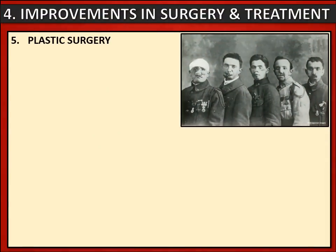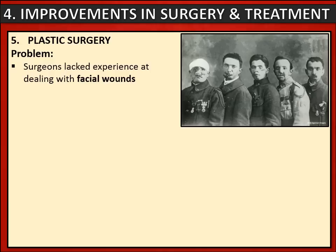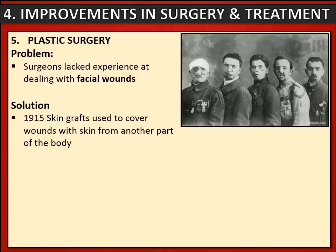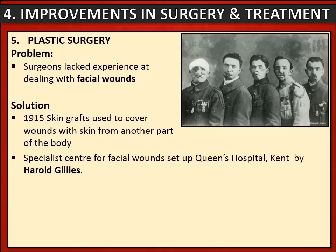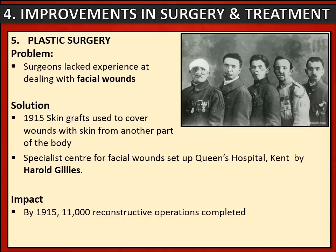Another area of surgery that developed was plastic surgery. At the start of the war surgeons lacked experience at dealing with facial wounds. The solution was to develop techniques to reconstruct soldiers' faces after they'd suffered terrible facial wounds. By 1915, a method called skin graft had been developed, which involved covering wounds using skin from other parts of the body. A key individual in this method was a surgeon called Harold Gillies, who set up a specialist centre for facial wounds in Queen's Hospital in Kent. The impact was that as early as 1915, 11,000 reconstructive operations had been completed, and by the end of the war thousands of men with facial wounds had been treated.